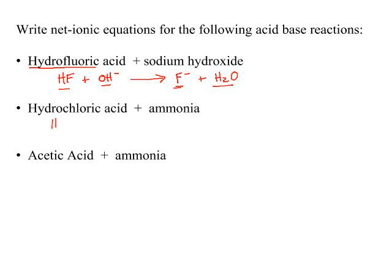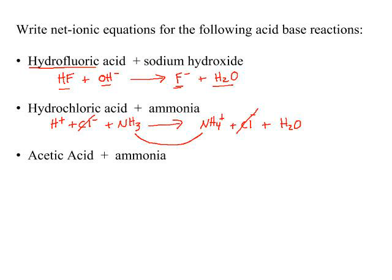Hydrochloric acid would be ionized. Now you've got the weak base ammonia, which you would write with no ionizing. Your products are going to be salt and water — the salt being ammonium chloride, which is a soluble salt, and molecular water. Your only spectator ion is the chloride ion, and that leaves you with the net ionic equation you'll always get when ammonia acts as a weak base: H+ + NH3 → NH4+.